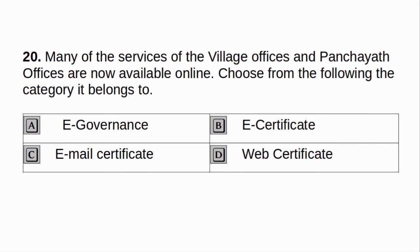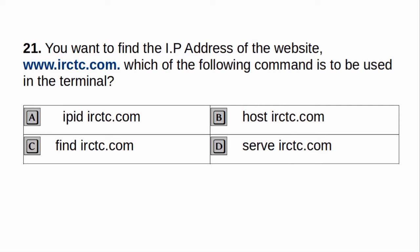Many of the services of the village offices and panchayat offices are now available online. Choose from the following the category it belongs to. A. E-governance. B. E-certificate. C. Email certificate. D. Web certificate. Answer: A. E-governance. You want to find the IP address of the website www.irctc.com. Which of the following command is to be used in the terminal? A. IPIRCTC.COM. B. HostIRCTC.COM. C. FindIRCTC.COM. D. ServeIRCTC.COM. Answer: B. HostIRCTC.COM.